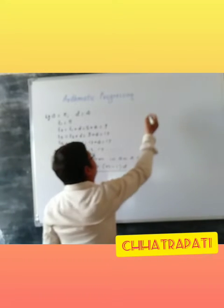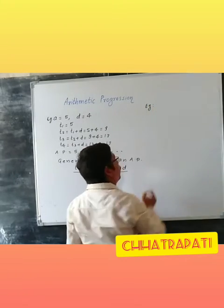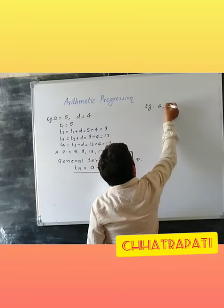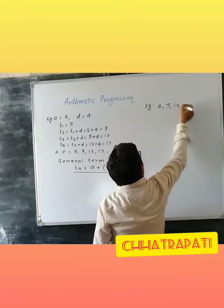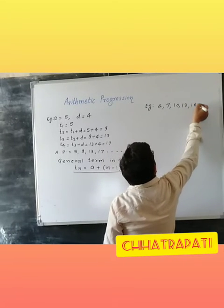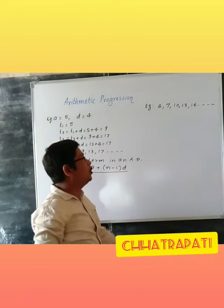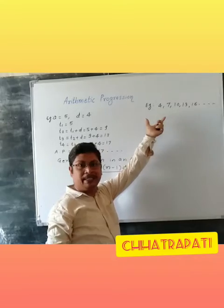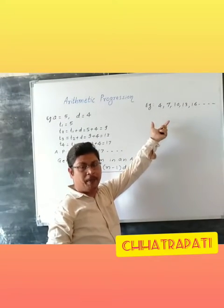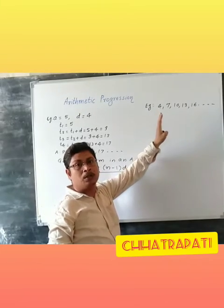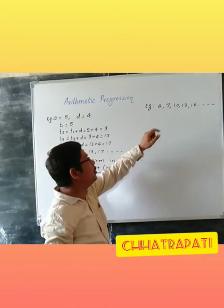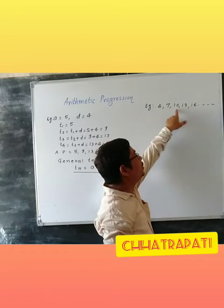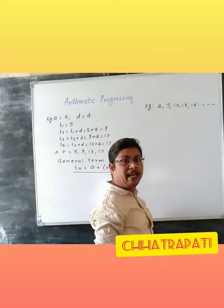We will see an example. Suppose we have given the sequence 4, 7, 10, 13, 16. To check whether this sequence is an AP or not: if the common difference is constant, then it is an AP; if not, it is not an AP. Here, 7 minus 4 is 3, 10 minus 7 is 3, 13 minus 10 is 3. So this sequence is an AP.